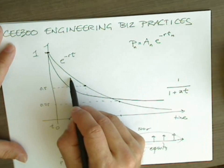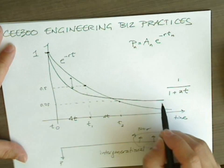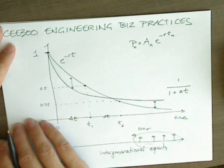The hyperbolic winds up discounting more than the exponential at first, and less than the exponential for very long-term events.